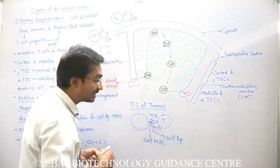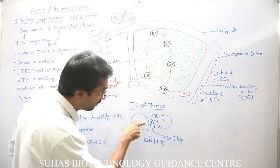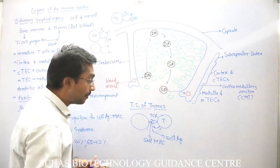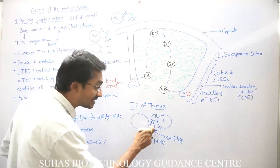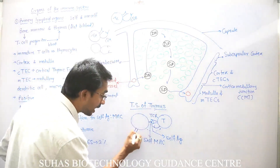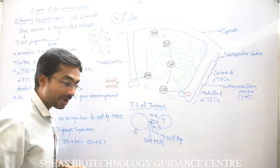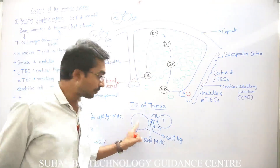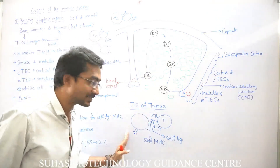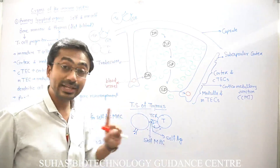When self antigen is shown, the T-lymphocyte will interact through TCR, and either CD4 or CD8 will also develop. If it is CD8, it will recognize the antigen in the group of MHC class 1; if it is CD4, it will recognize only in the group of MHC class 2. In both cases, self antigen is shown to the T-lymphocytes.